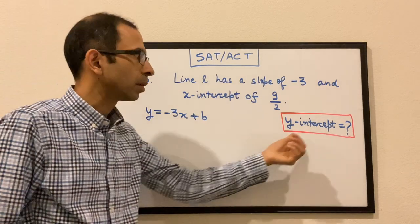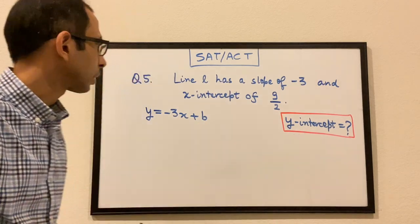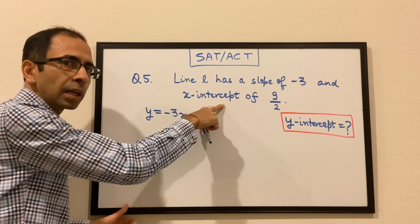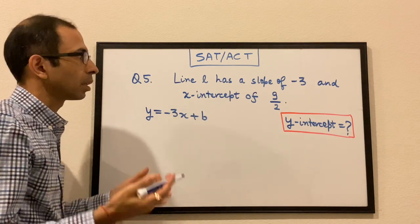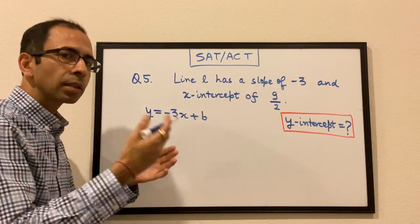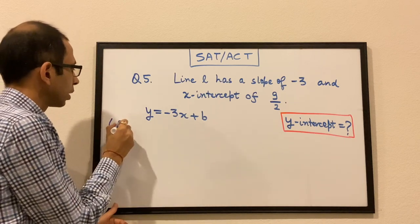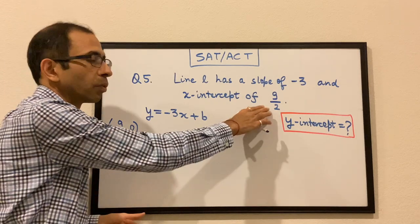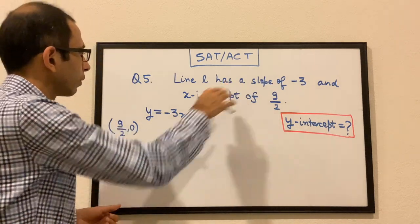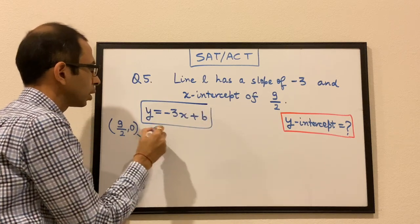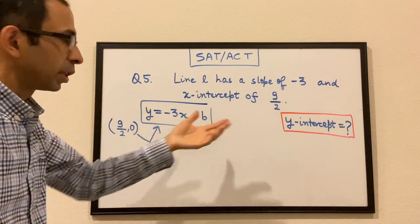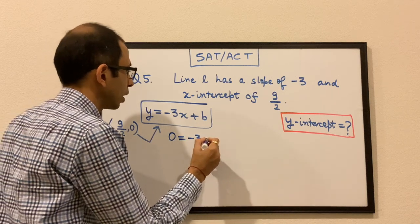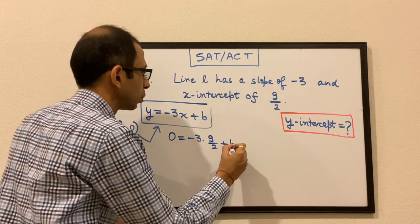We need to find b, the y-intercept. The x-intercept of 9/2 means the line passes through the point (9/2, 0). We plug this point into the equation: 0 = −3(9/2) + b.